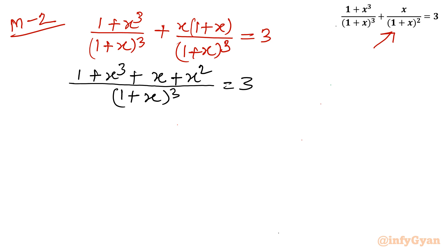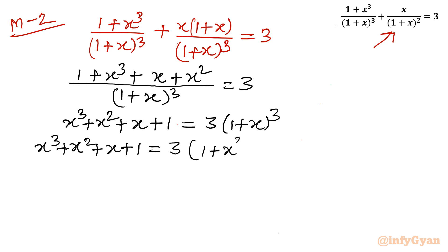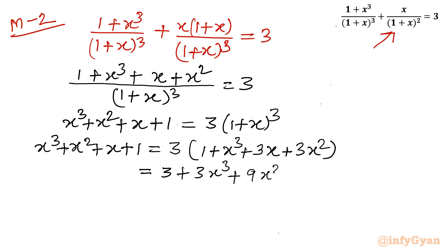Cross-multiplying: x³ + x² + x + 1 = 3(1 + x)³. Expanding the right-hand side using (a + b)³ = a³ + b³ + 3a²b + 3ab²: 3(1 + x)³ = 3 + 3x³ + 9x² + 9x.